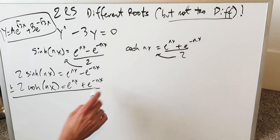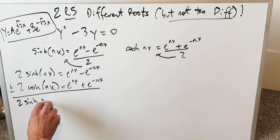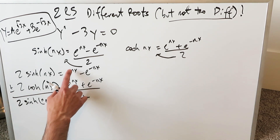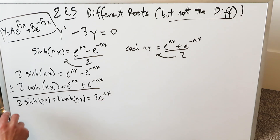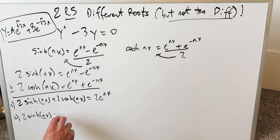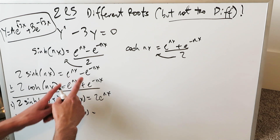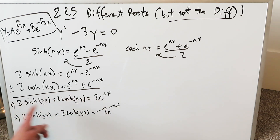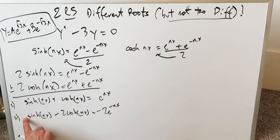Add and subtract these equations to get two different results. When you add them: 2 hyperbolic sine nx plus 2 hyperbolic cosine nx equals 2 e to the nx. When you subtract them: 2 hyperbolic sine nx minus 2 hyperbolic cosine nx equals minus 2 e to the minus nx. The 2s appear everywhere and can be cancelled — divide everything by 2 to eliminate them.